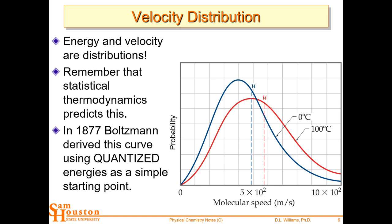If the gaps are close together you get the high-velocity atoms or molecules, and if you move the gap around you get the slow molecules. You get a peak in the middle where you have the average, most probable, or root-mean-squared velocities. This is the energy or velocity distribution. Thermodynamics predicts this. In fact, Boltzmann — this is the new bullet point for this week — in 1877 derived this curve using quantized energies.